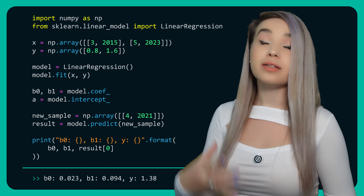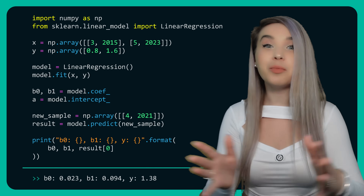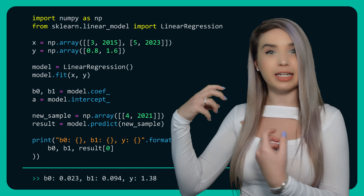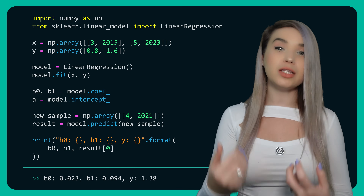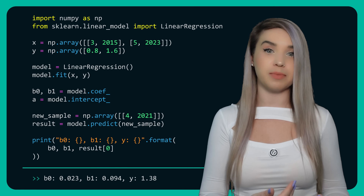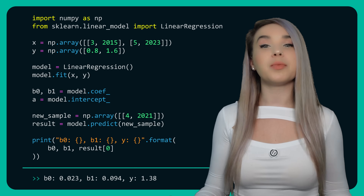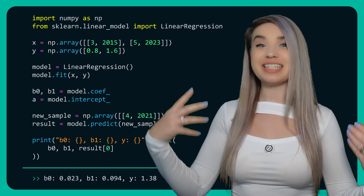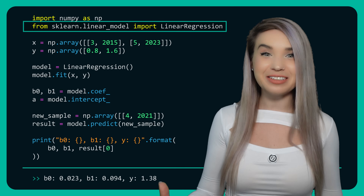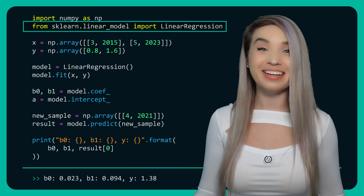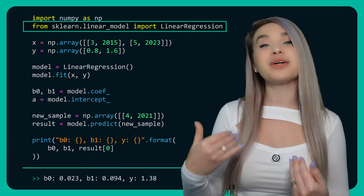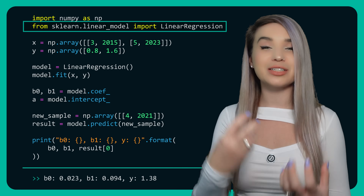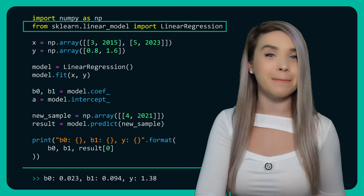Well, one solution is using a more complex algorithm for finding the slope and the y-intercept. So, for example, if we use a library named scikit-learn to predict the same data, then we are dealing with an algorithm named the least squares method.